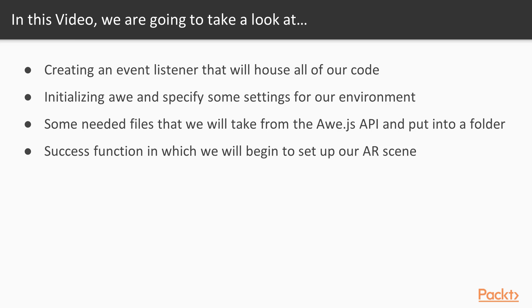When you click on each cube in descending order, the corresponding cube will go back into the other one. We are going to start the application by setting up an event listener that will house all the code. Then we will initialize aw and specify some settings for our environment. After that, we will require some needed files to begin working with aw.js, put those files into a specific folder, and create a success function under which we will start up our AR application in the next video.